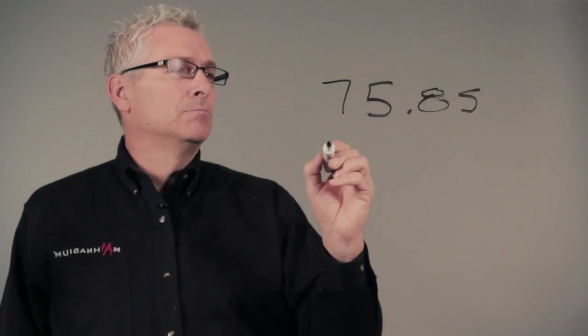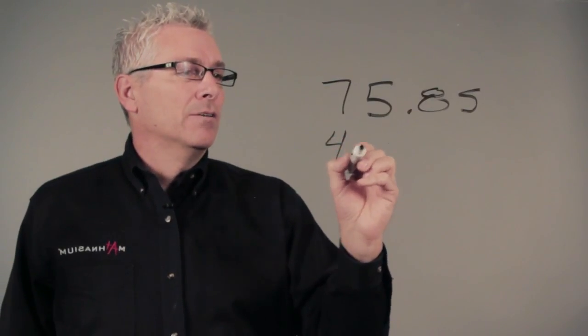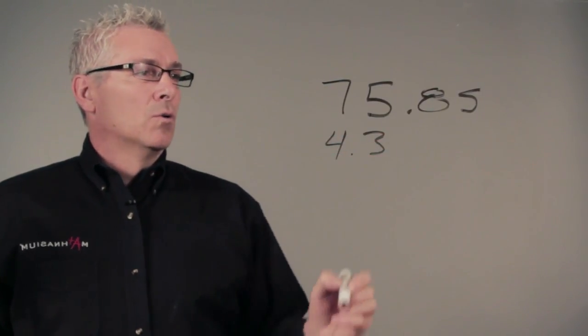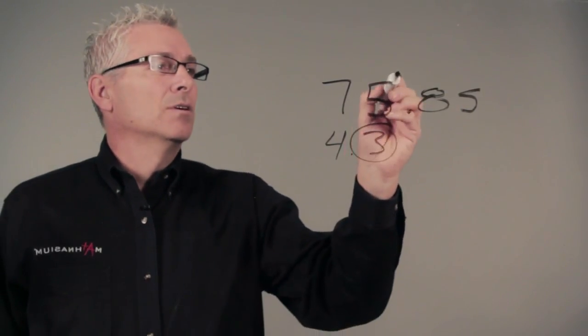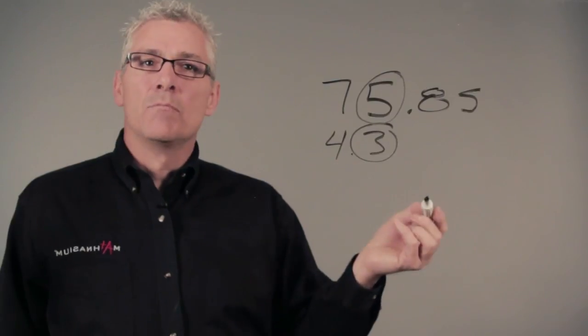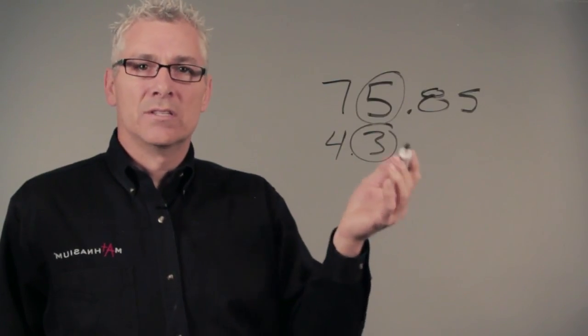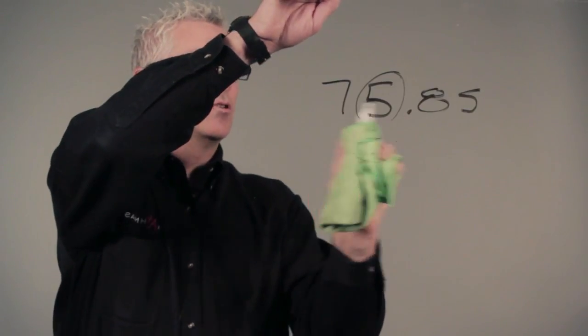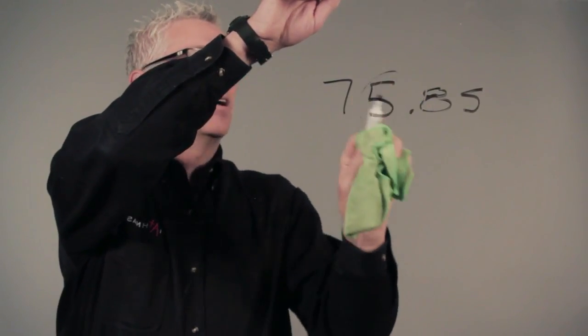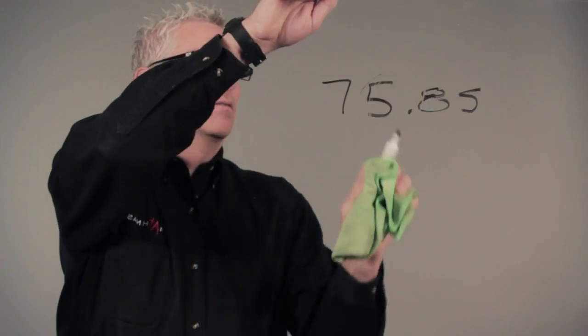So if I'm going to subtract 4.3 from this, we're saying that this is worth three tenths, but this is worth five wholes. They don't match. They're not worth the same place value. So it's very important for us to be able to subtract the same place value from the other.